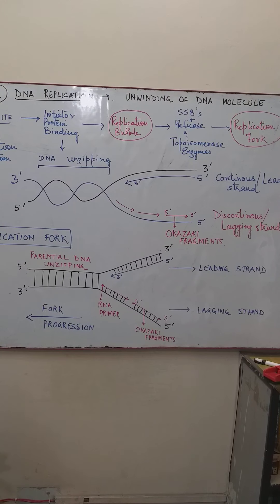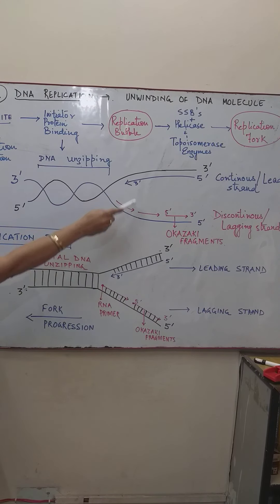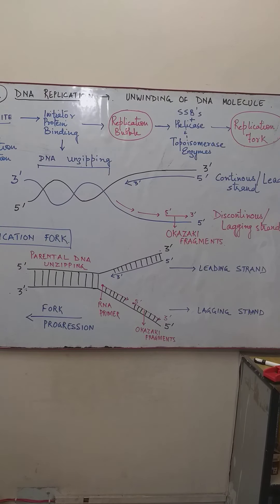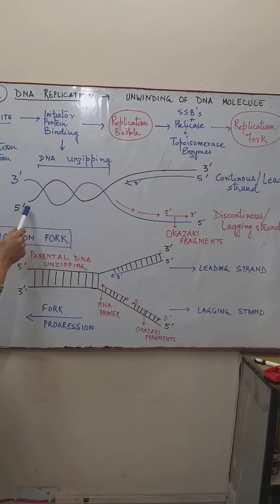This unzipping or breaking of hydrogen bonds results in the complete separation of the DNA strands, and this replication bubble leads to the formation of the replication fork, as shown in the figure. At this replication fork, the synthesis of DNA — the copying of DNA into complementary strands — will take place.